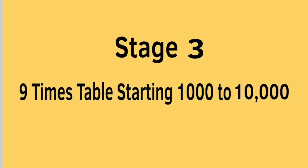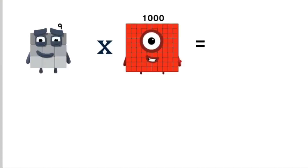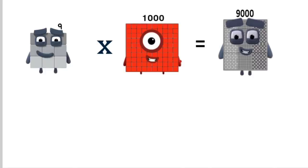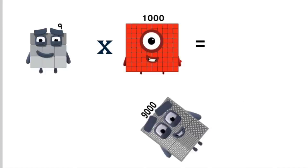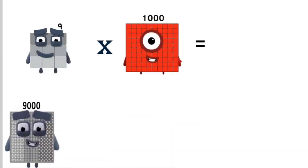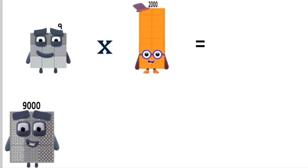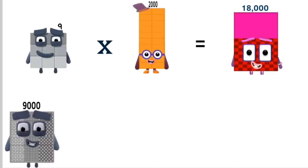Stage 3. 9 times 1,000 equals 9,000. Times 2,000 equals 18,000.